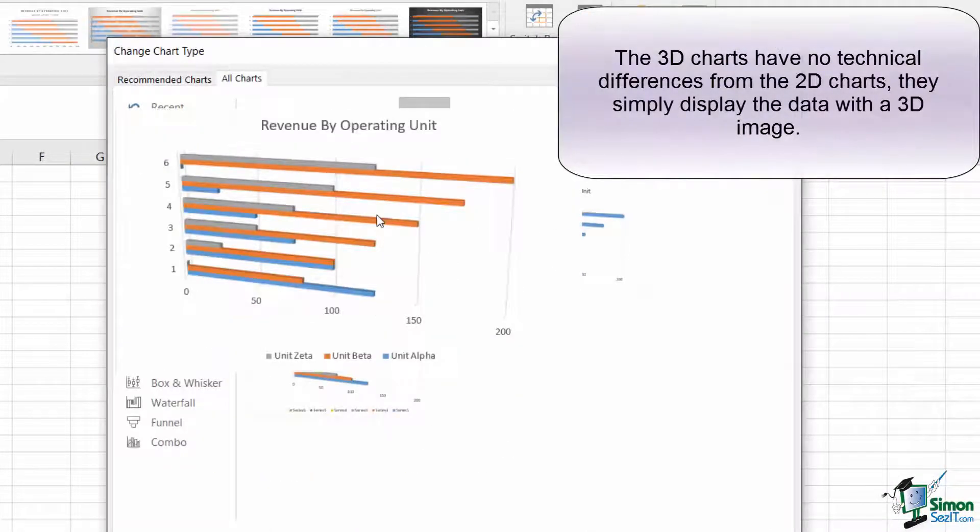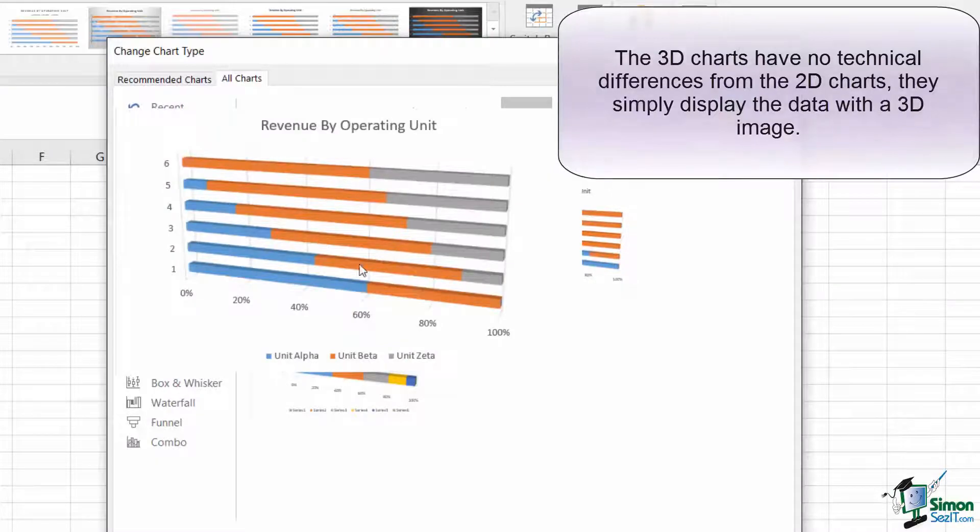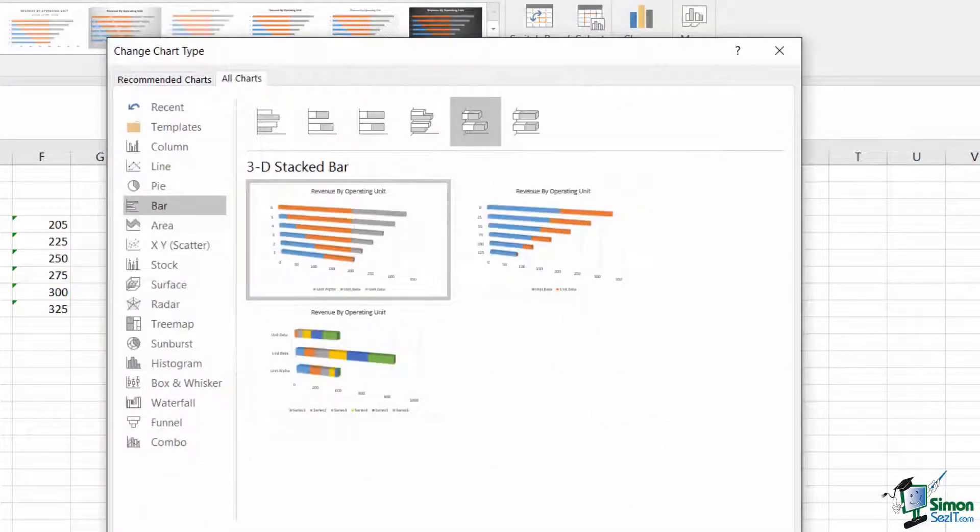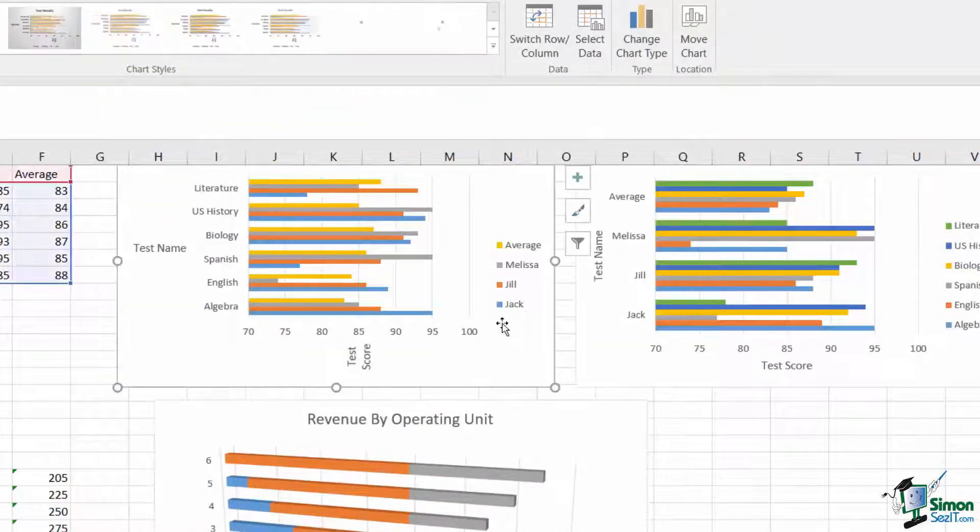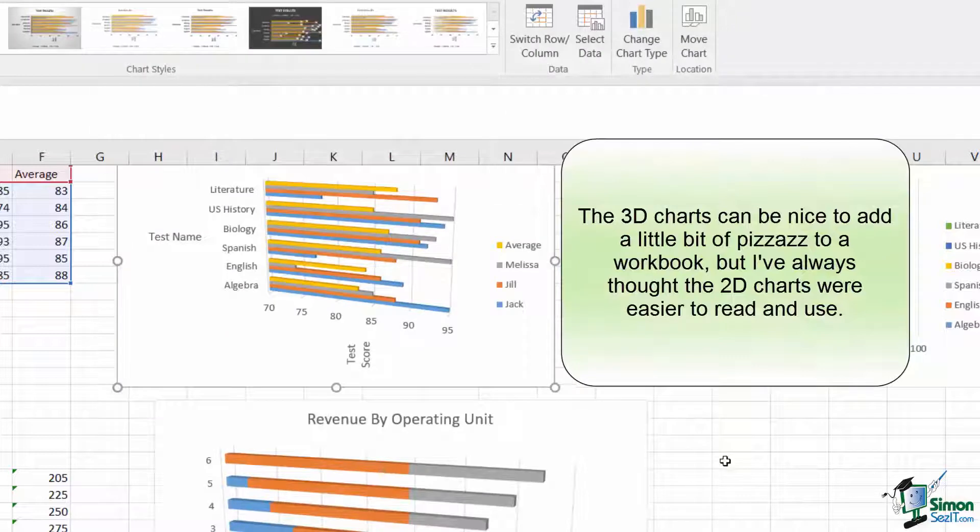Each of the 3D bar charts are identical to the 2D versions in interpretation, except they provide a slightly flashier view. I can walk through each of these and change them to the 3D view by simply going to the change chart type and picking the appropriate chart type to switch it to. The same information is displayed, it just gets displayed a little bit differently.